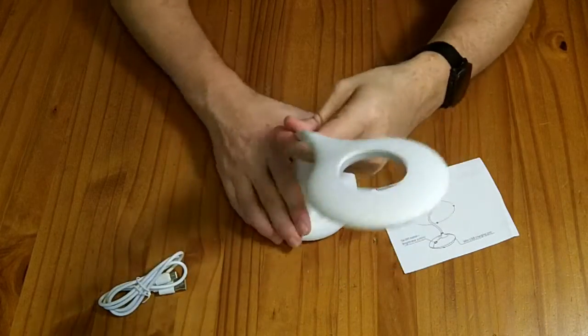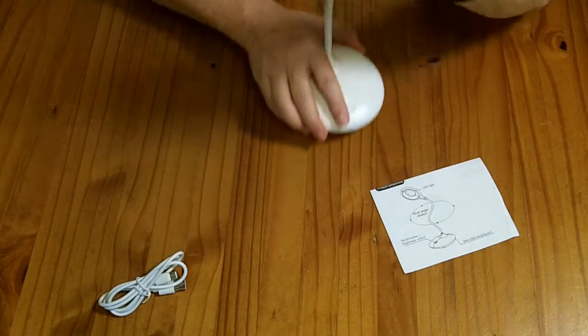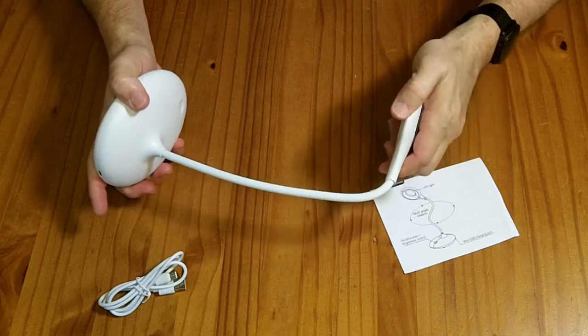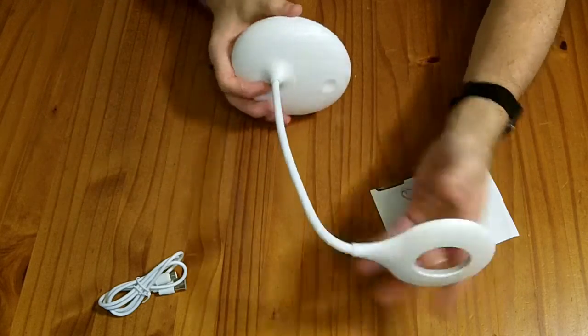So in the box we get the lamp itself, which extends up to about 18 inches total, although you typically use it kind of tilted like that, so closer to a foot high.